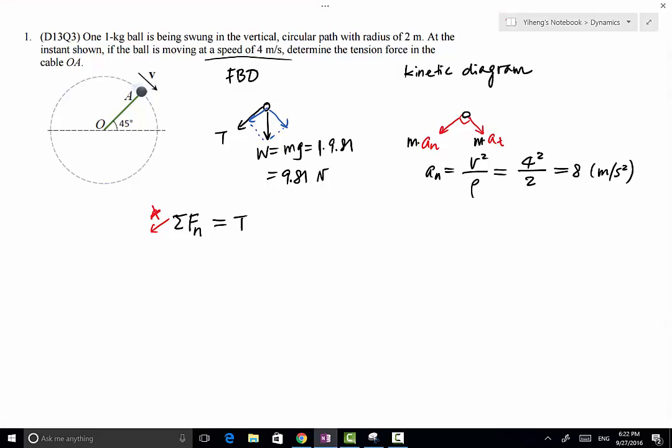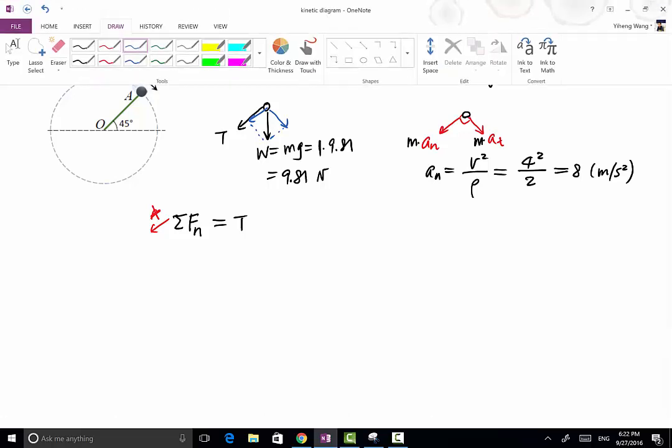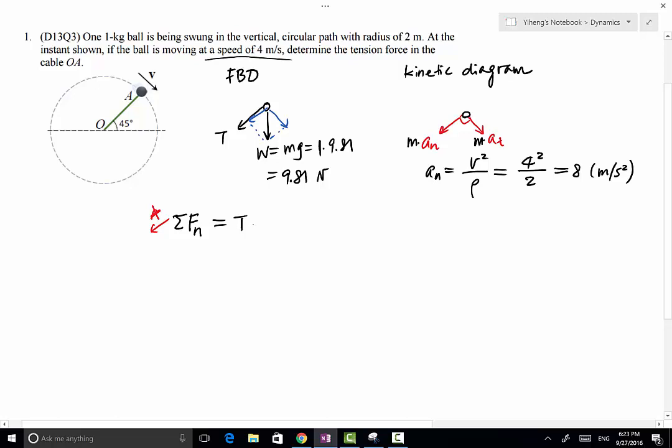And the weight force will have a component along the normal direction. That will be plus W times cosine 45 degree. And that equals to T plus 9.81 times cosine 45 degree. And on the right hand side that equals to Man which equals to 1 times 8. So you can see that from this equation we actually can solve for T. We only have one unknown in this equation. Therefore T equals to 1.06 Newton.